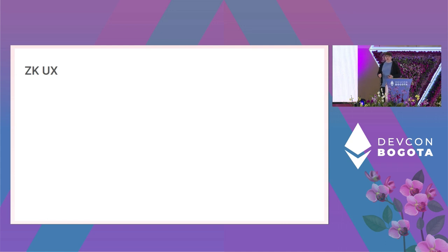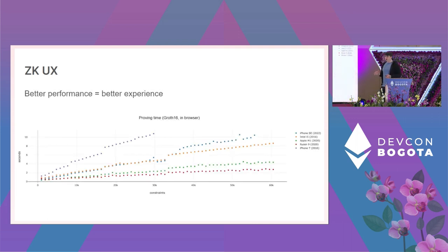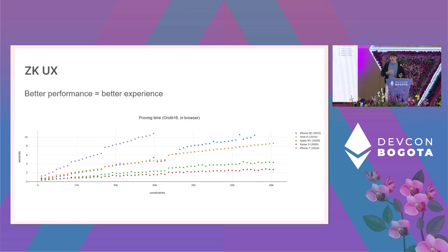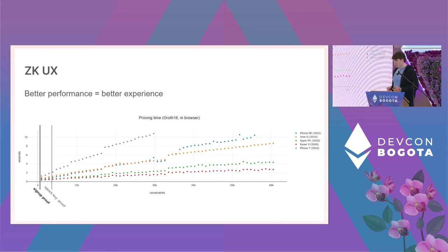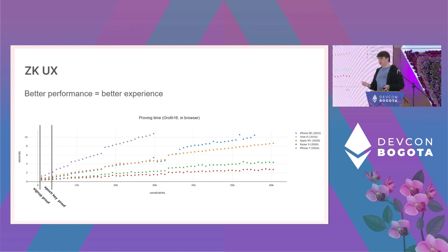Now let's talk about user experience for zero-knowledge applications. We want users to be able to make proofs inside their browser. Here's a graph of proving time for proofs of various sizes on different devices. There's a sweet spot below 30,000 constraints where any proof takes less than five seconds on most modern devices. Older mobile devices like a 2016 iPhone can still do it in under 10 seconds. UniRep's signup proof is only 700 constraints — less than one second — and an epoch key proof is about 3,000 constraints, still less than one second on most devices.